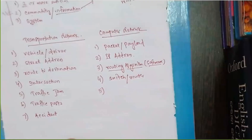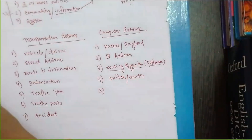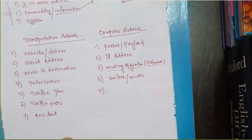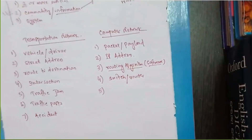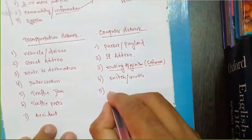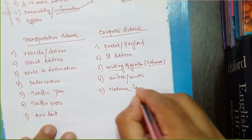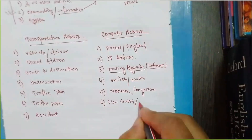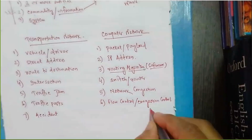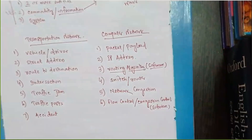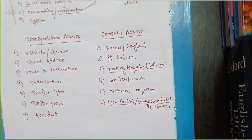Next, the traffic jam. Traffic jam means more vehicles are on the road than its capacity, causing a jam. Similarly in computer network, whenever data is transferred over a physical medium like a wire, the wire has a capacity. If I send data more than the capacity of the medium, there will be a traffic jam — this is referred to as network congestion or congestion control, handled by flow control algorithms or congestion control algorithms.